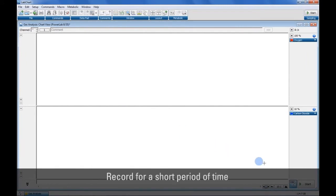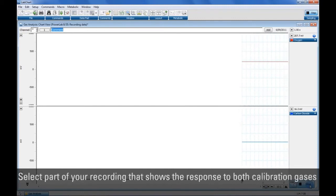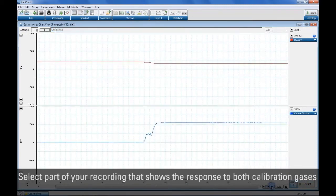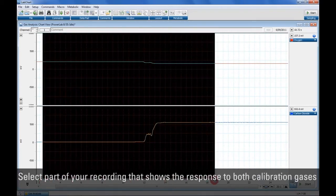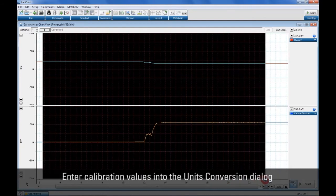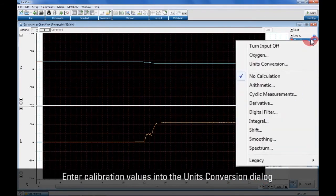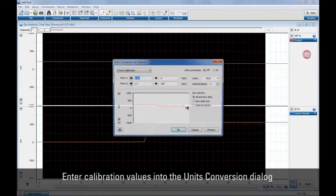Next record the transducer's response to gases of known concentrations. Then select the region of the LabChart recording that shows the response to both calibration gases.